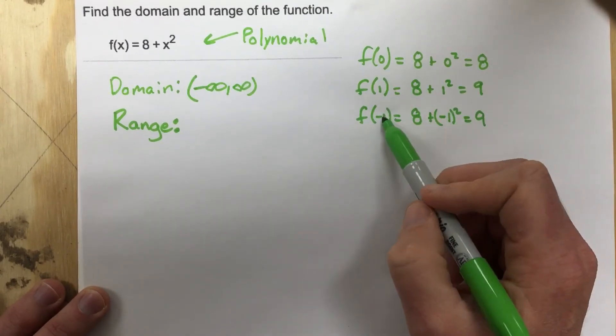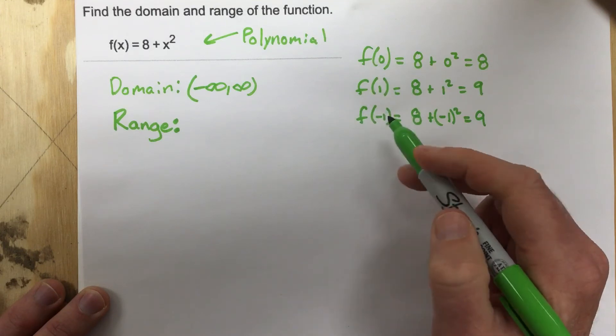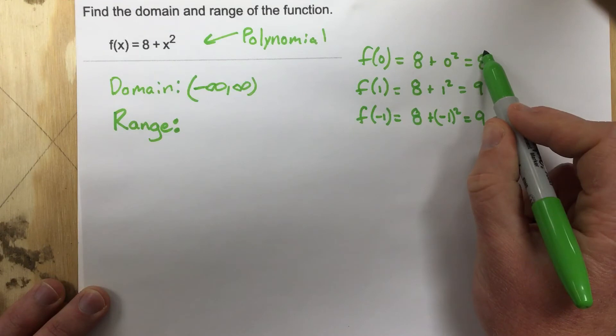So you notice that I've gone on either side of this function. And when I've gone on either side of this function, I end up with a number that is larger than 8.